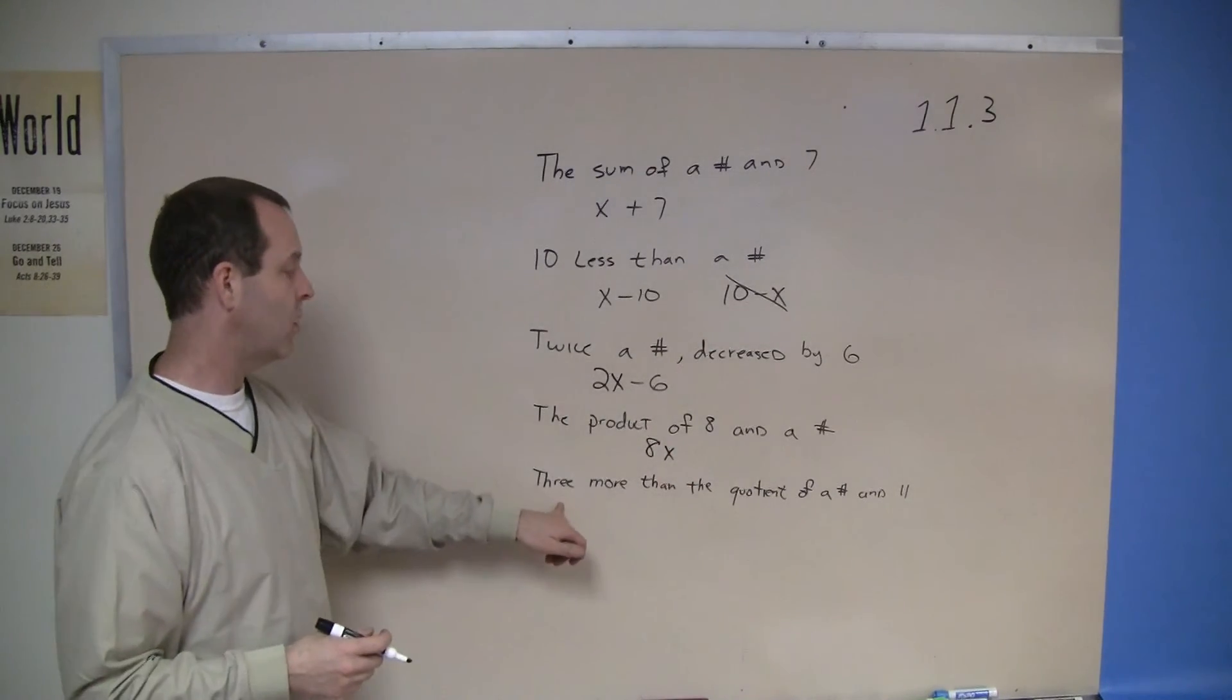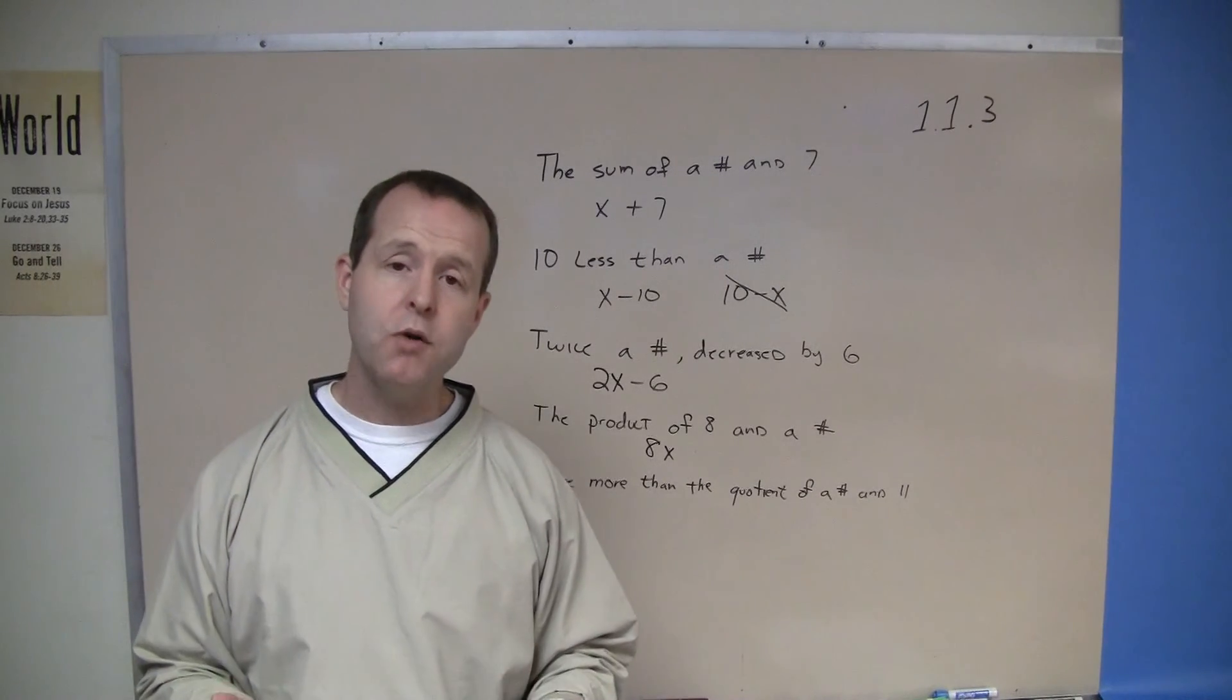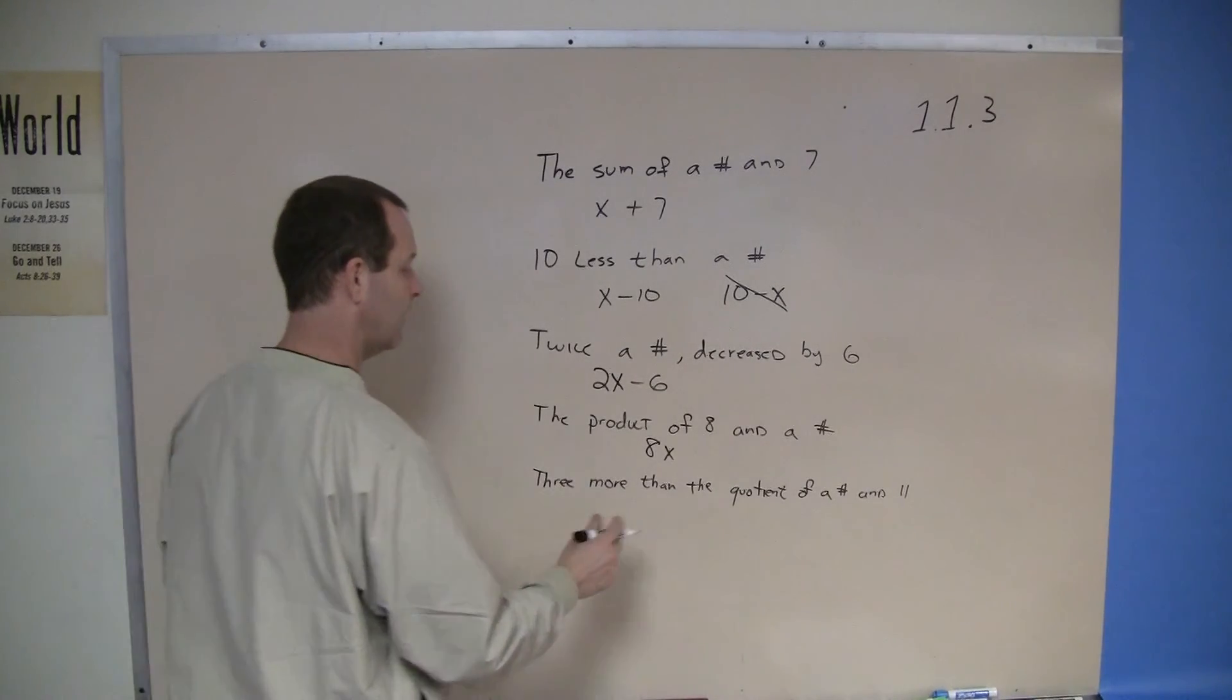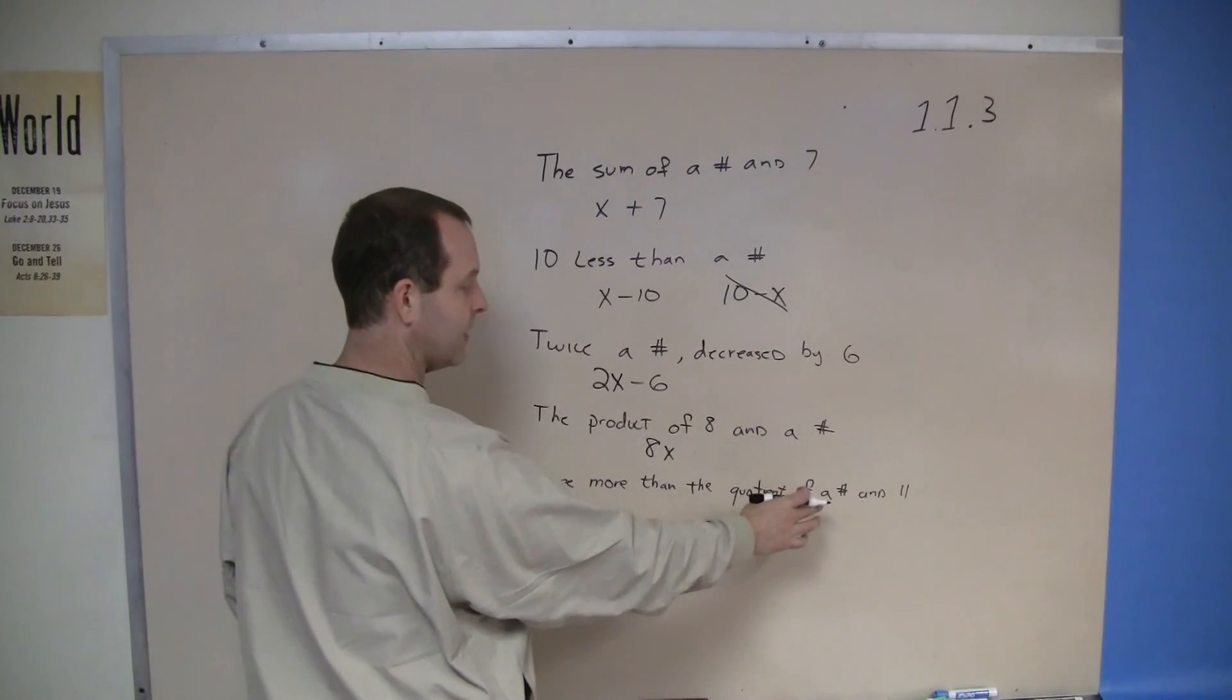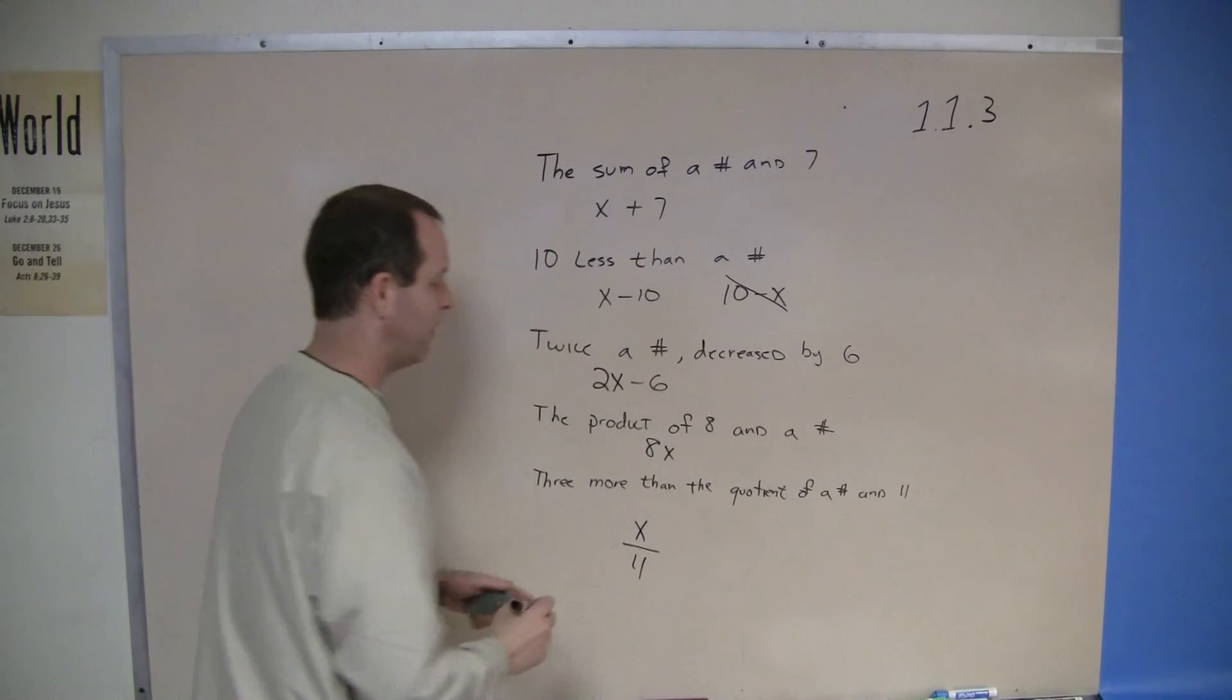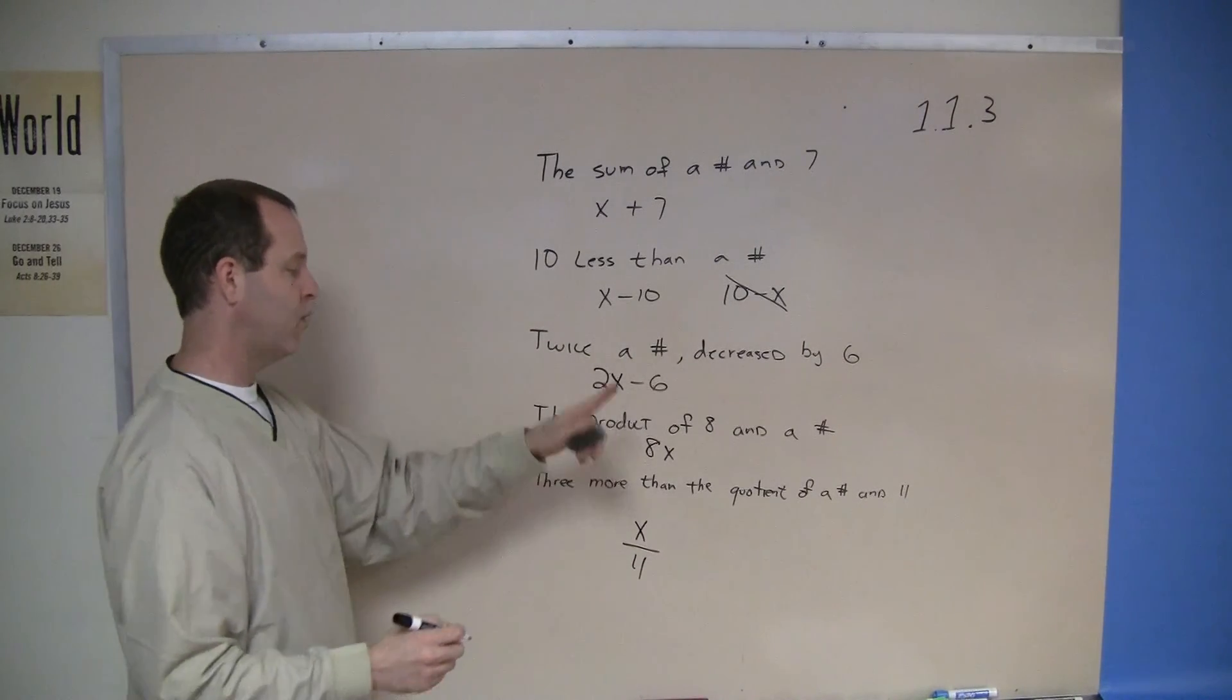And the last one - three more than the quotient of a number in 11. A quotient is a division term. So three more than the quotient of some number in 11 - x divided by 11, that's the quotient of x and 11, and I want to add three more to that.